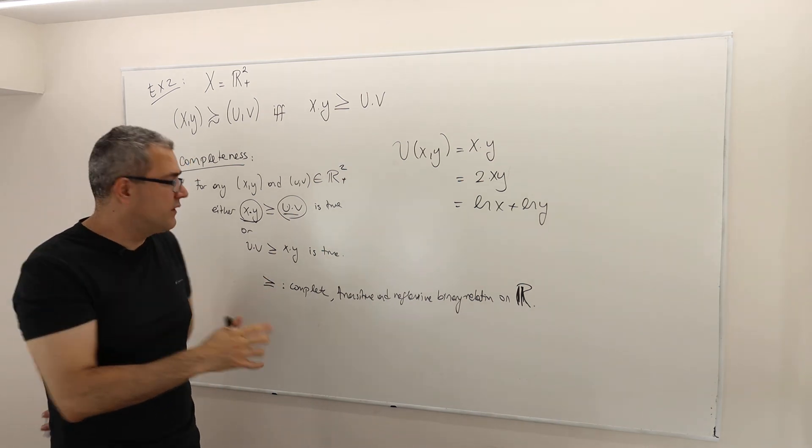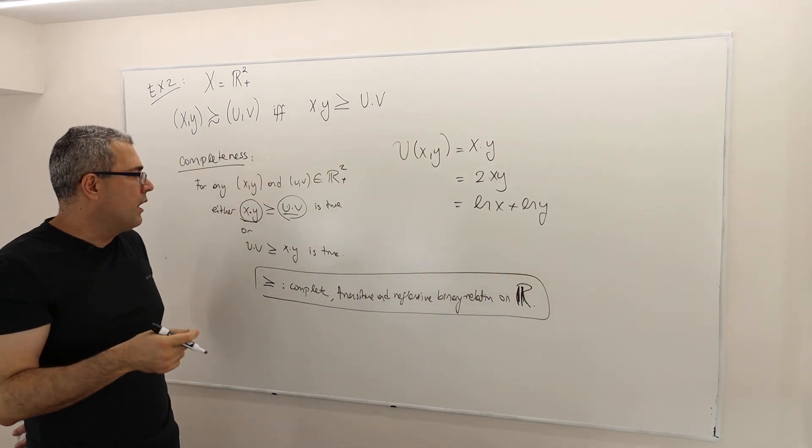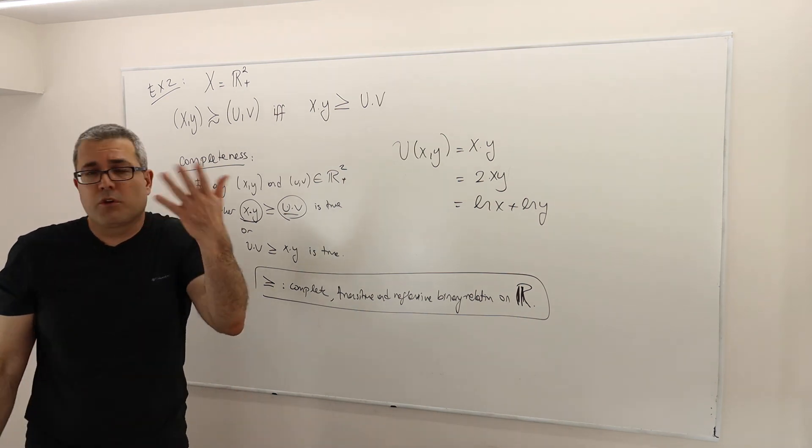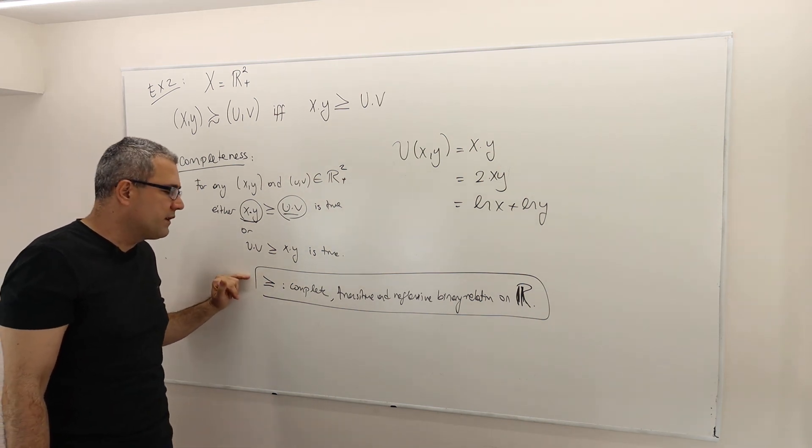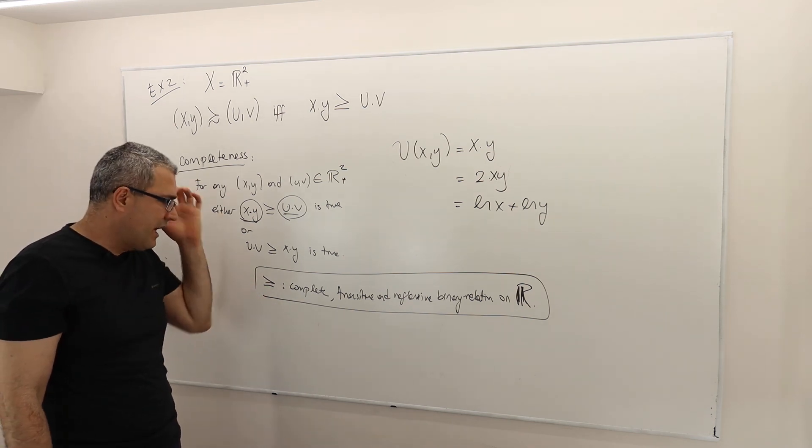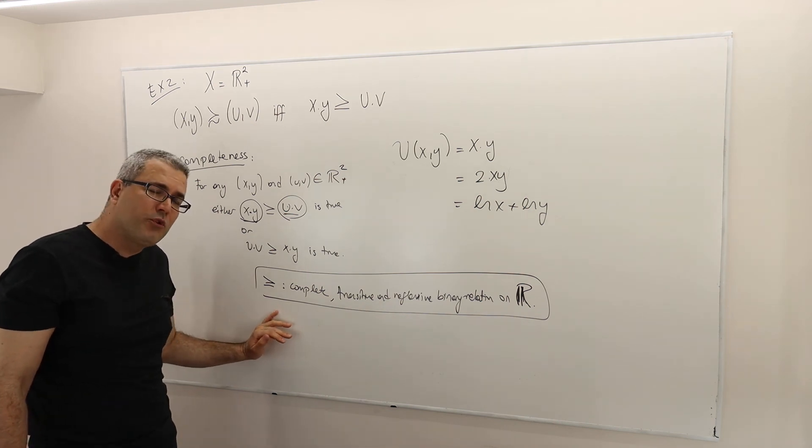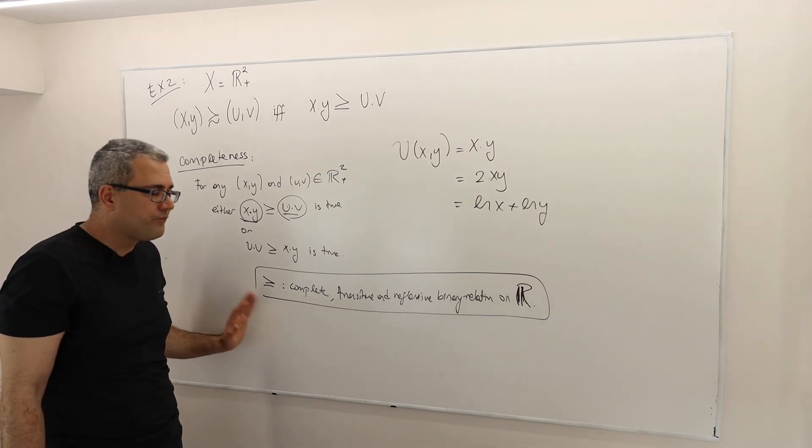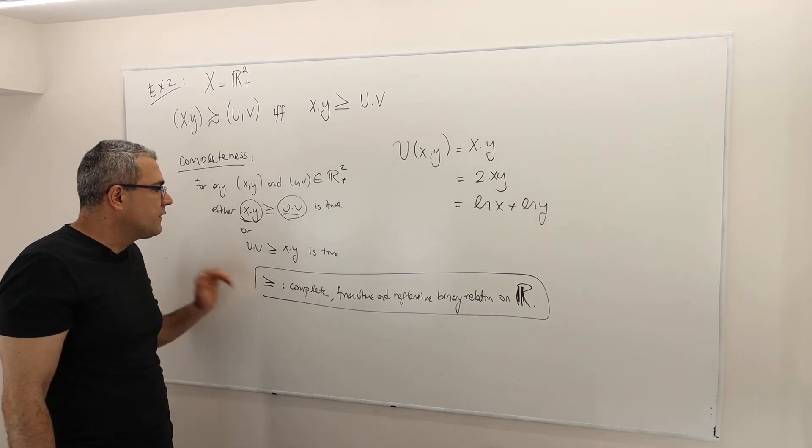So maybe this is an argument you need to prove just to convince yourself. So it's a homework for yourself. I'm not making it a formal homework. But it's a good homework for yourself to prove this argument, that it is complete, it is transitive, it is reflexive. You'll see the proof is not going to be difficult because you know it as sort of an obvious thing. But the proof is possible, obviously.